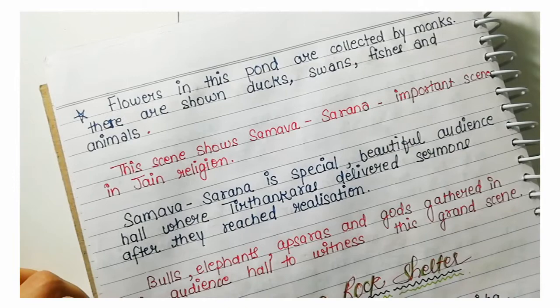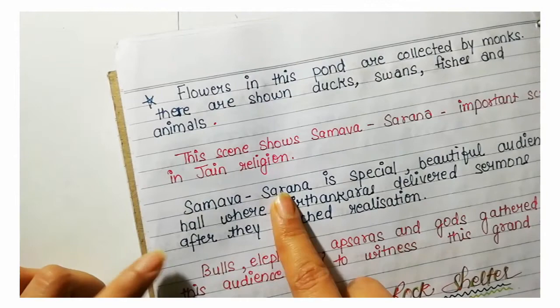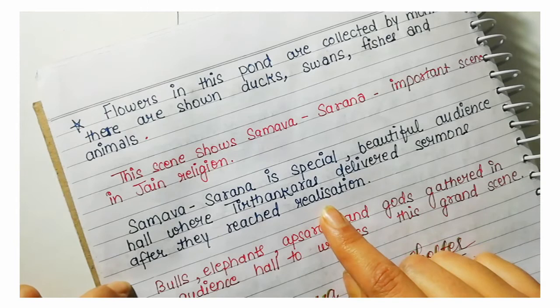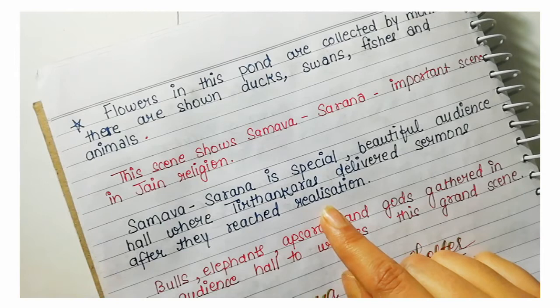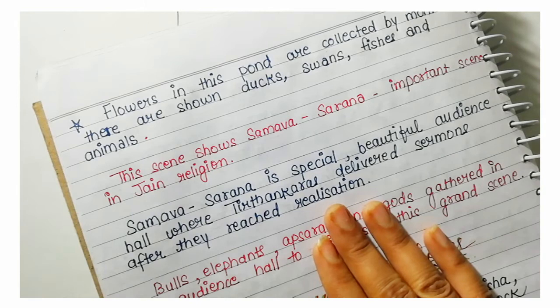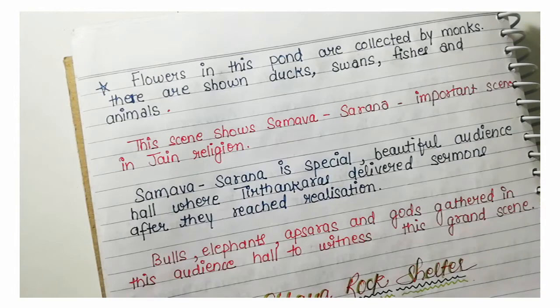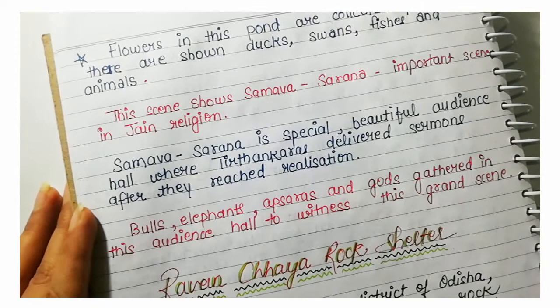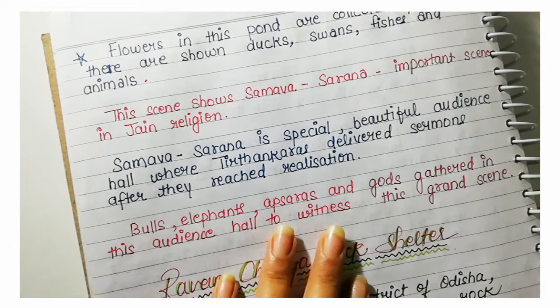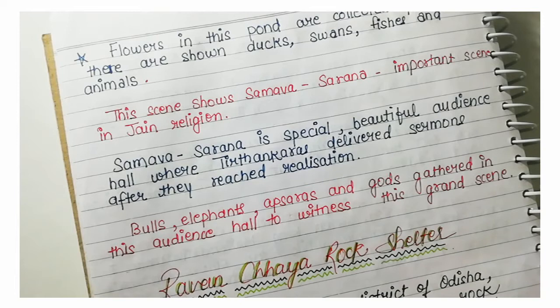Samv Sarana is a special beautiful audience hall where Tirthankaras delivered sermons after they reached realization or nirvana. Bulls, elephants, apsaras, and gods gathered in this audience hall to witness this grand scene, which is depicted in the cave paintings.